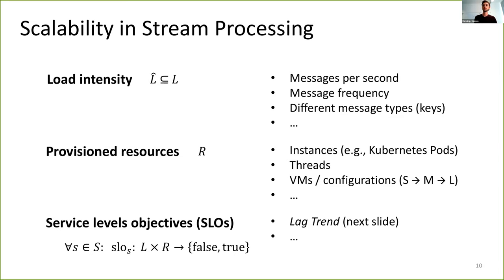For service level objectives, we define an SLO function which maps a deployment consisting of load and resources to true or false depending on whether an SLO is fulfilled for that load resource combination. To make it more specific, I present an example of our lag trend metric.